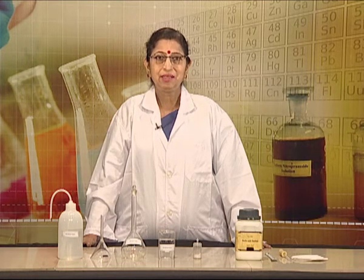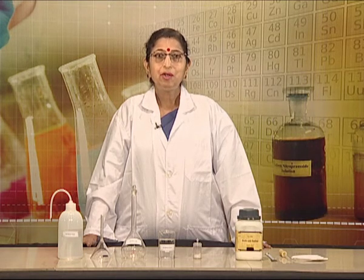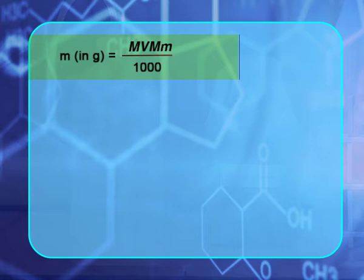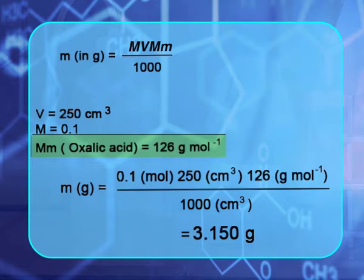Its molar mass is 126 gram per mole. To prepare 250 centimeter cube of 0.1 molar solution of oxalic acid, we will use the following formula: mass of the solute in grams equals molarity of the solution multiplied by the volume of the solution in centimeter cube, multiplied by the molar mass of the solute, and divided by 1000.